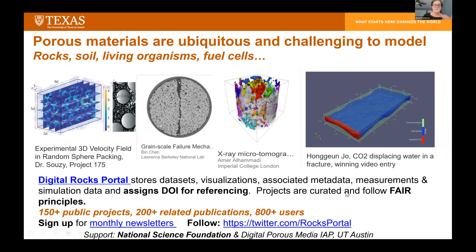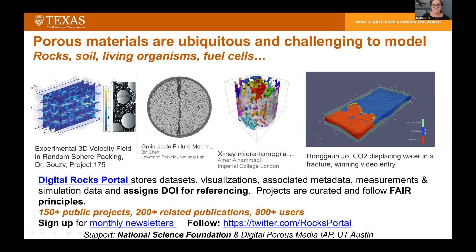We organized the Digital Rocks Portal, which stores datasets, visualizations, associated metadata, measurements, and simulation data, and we assign DOIs for referencing. Right now we have about 150+ public projects — examples include experimental velocimetry in sphere packs, cross-sections of 3D X-ray images showing grain fracturing, experimental snapshots of fluid blobs within carbonate cores, and results of simulations. Through DOI referencing we can track publications that reuse the datasets — currently about 200+ related publications.